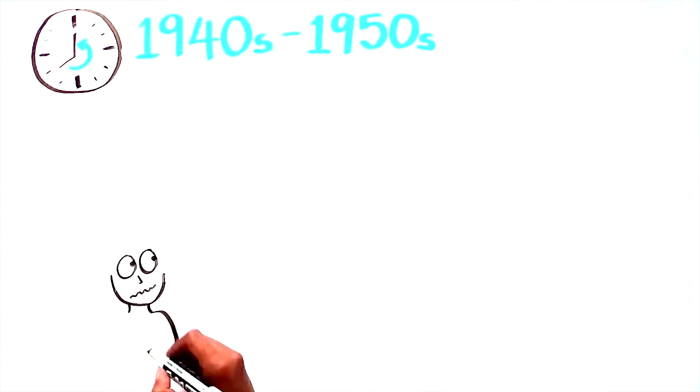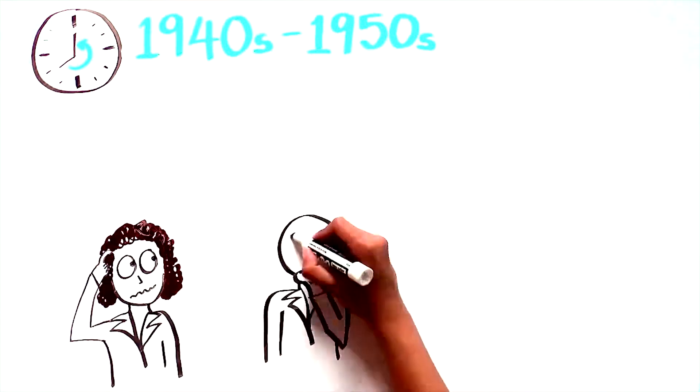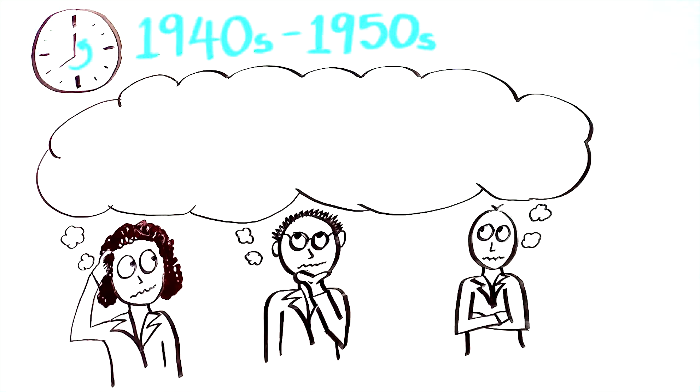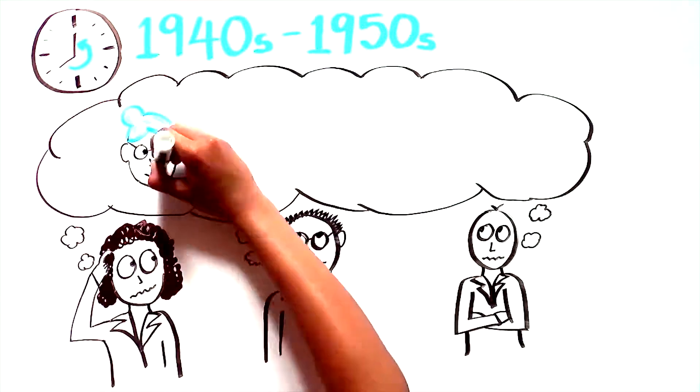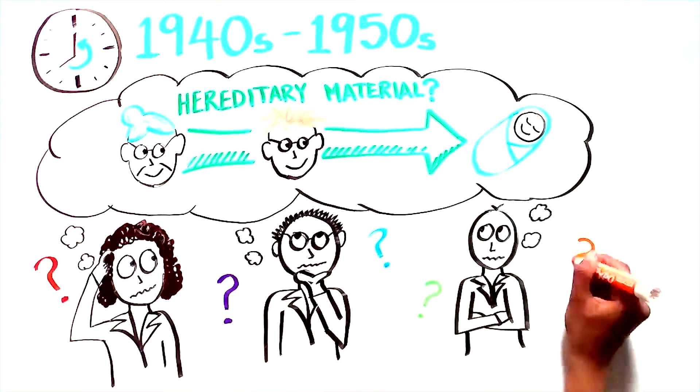Turning the clock back to the 1940s and 50s, the scientific community was in the midst of a debate about the nature of the hereditary material that is responsible for passing our traits on to our children, to our children's children, and so on for generations. Pretty existential question, right?